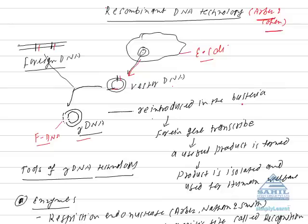Now this recombinant DNA is again inserted into E. coli. In the E. coli, the foreign gene is transcribed. And after transcription, a useful product is formed. This useful product is isolated and used for human welfare.